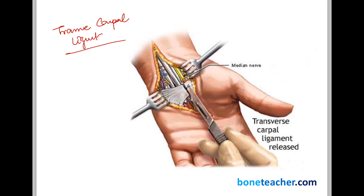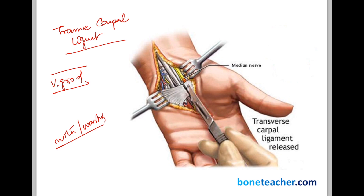An important point to remember: if transverse carpal ligament release is performed early in the disease when the patient only has sensory manifestations, the chances of recovery are very high and prognosis is good. However, if the release is performed later when there is motor involvement or muscle wasting, the prognosis is poor even after surgery. A patient with sensory deficit will get very good surgical results compared to one with motor deficits.